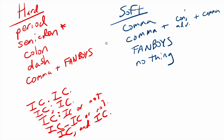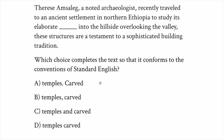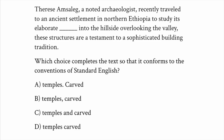Looking at the answer choices first, we've got hard punctuation in answer choice A, and soft, soft, and soft — just a comma, just the conjunction, and nothing. So when you have a mix of one hard punctuation mark and three soft ones, chances are the hard one is going to be correct. But we still want to read the sentence: 'This person recently traveled to an ancient settlement in northern Ethiopia to study its elaborate temples carved into the hillside overlooking the valley. These structures are a testament to a sophisticated building tradition.'